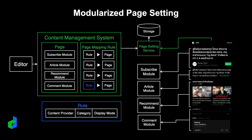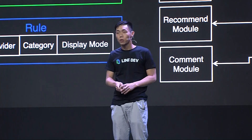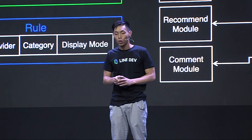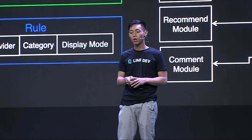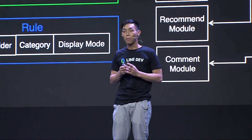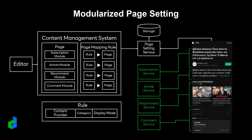This is the architecture design for modularized page setting. When the editor would like to set up a page, they go to the content management system to set up two parts. The first is page setting, which defines what modules the page consists of. The second part is the page mapping rule — a rule mapped to a certain page. The rule can be based on different content providers, categories, display modes, or a combination. The page and page mapping rule are controlled by the page setting service. When the user enters a page, a request for page modules is sent to the page setting service, and the composed modules are returned without module data. In this case, the pages consist of a subscription module, article module, recommend module, and comment module.